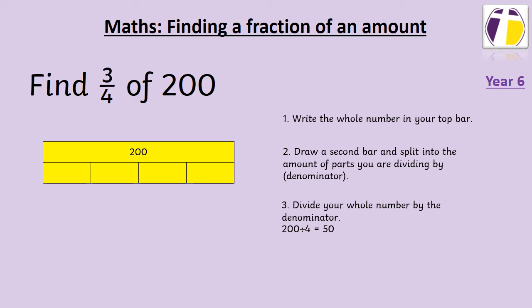We then divide our whole number by our denominator. 200 divided by 4 is 50, so each part represents 50. Each quarter is worth 50. We then use the numerator to work out how many of those parts we want. And as the numerator here is 3, we want 3 parts.